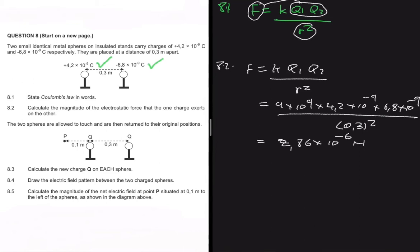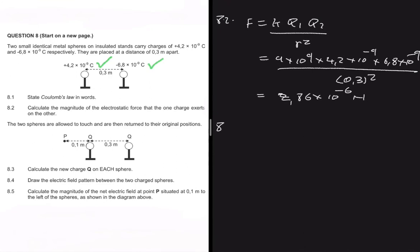Moving to 8.3: the two spheres are allowed to touch and then return to their original positions. The question asks us to calculate the new charge q on each sphere. The formula is q_new = (q1 + q2) / 2. Here, unlike before, we must include the sign — because when the two spheres touch there is an electron transfer, and we need to account for that by substituting the sign.